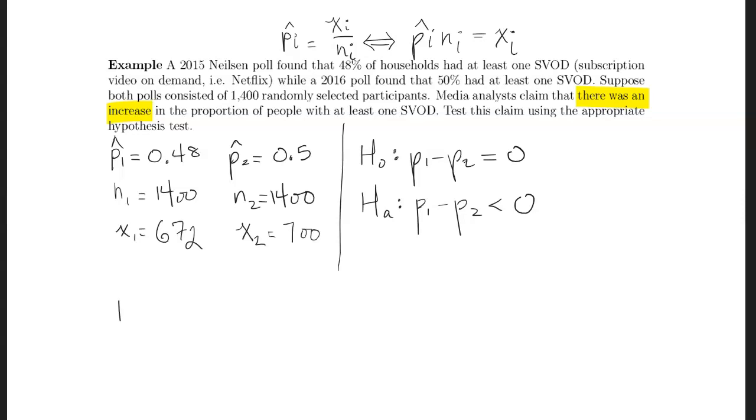Now we calculate our test statistic. We're going to need the standard error, which means we need the pooled proportion parameter. So P hat equals 672 plus 700 over 1,400 plus 1,400, and that is 0.49.